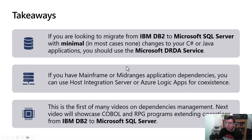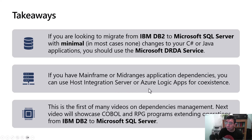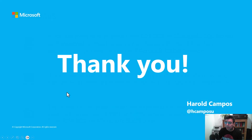The takeaways from this video: if you are looking to migrate from IBM DB2 to Microsoft SQL Server with minimal — in most cases none — changes to your C# or Java applications, you should use the Microsoft DRDA service. If you have mainframe or mid-range application dependencies, you can use Host Integration Server or Azure Logic Apps for coexistence. This is the first of many videos on dependency management. The next video will showcase COBOL and RPG programs extending operations from IBM DB2 to Microsoft SQL Server. Thank you for your time — please subscribe to the channel for more videos on this topic.